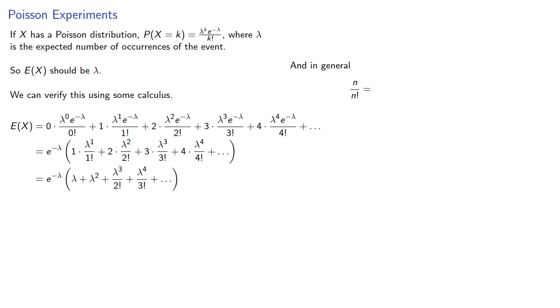And in general, n divided by n factorial will be 1 divided by n minus 1 factorial. And so our terms inside the parentheses can simplify, and everything inside the parentheses has at least one factor of lambda, so we can remove that factor as well.